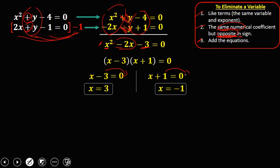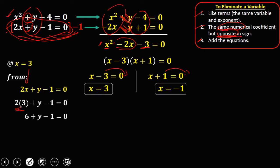Then to solve for y, just substitute the value of x to any of these equations. So I choose this second equation because this one is less complicated compared to the first equation. So from equation number 2, substitute your x equal to 3, so 2 times 3 plus y minus 1 equals 0. So 2 times 3 is 6.